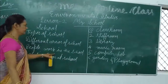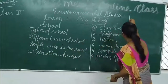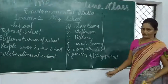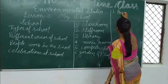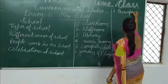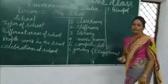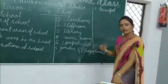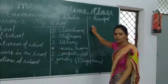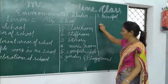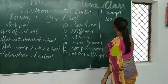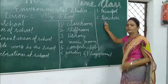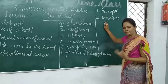Now we will see the people who work in the school. There are so many people who help us in school in many ways. First, there is a principal. A principal helps us in many ways — he guides the staff members on what to do and how to do it. It is the duty of the principal to look after the whole school. Number two is teachers. Teachers teach us different subjects.